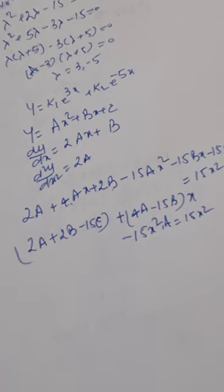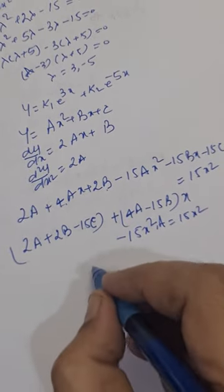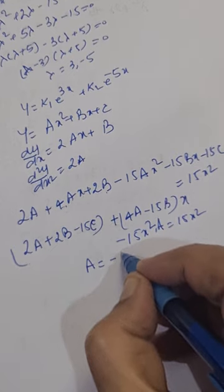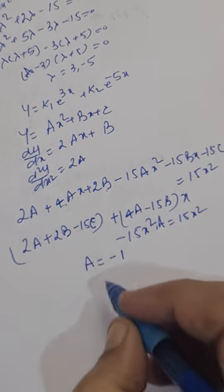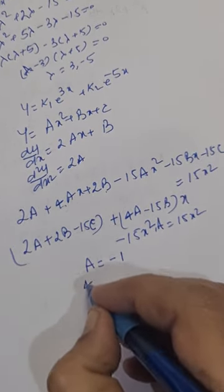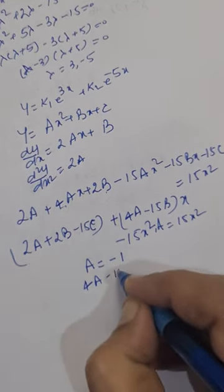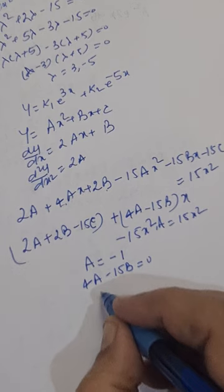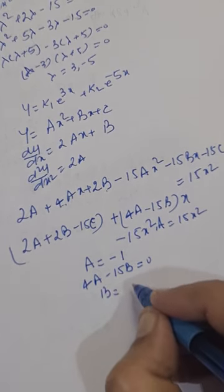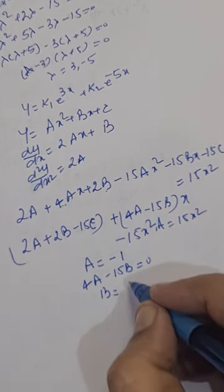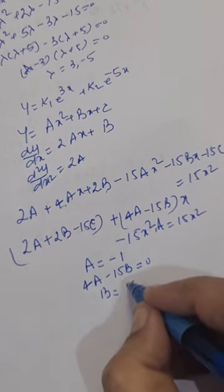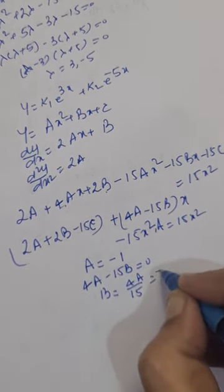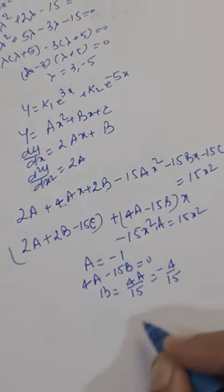Comparing coefficients, from the x² term: −15a = 15, so a = −1. From the x term: 4a − 15b = 0, so b = 4a/15. Since a = −1, we get b = −4/15.